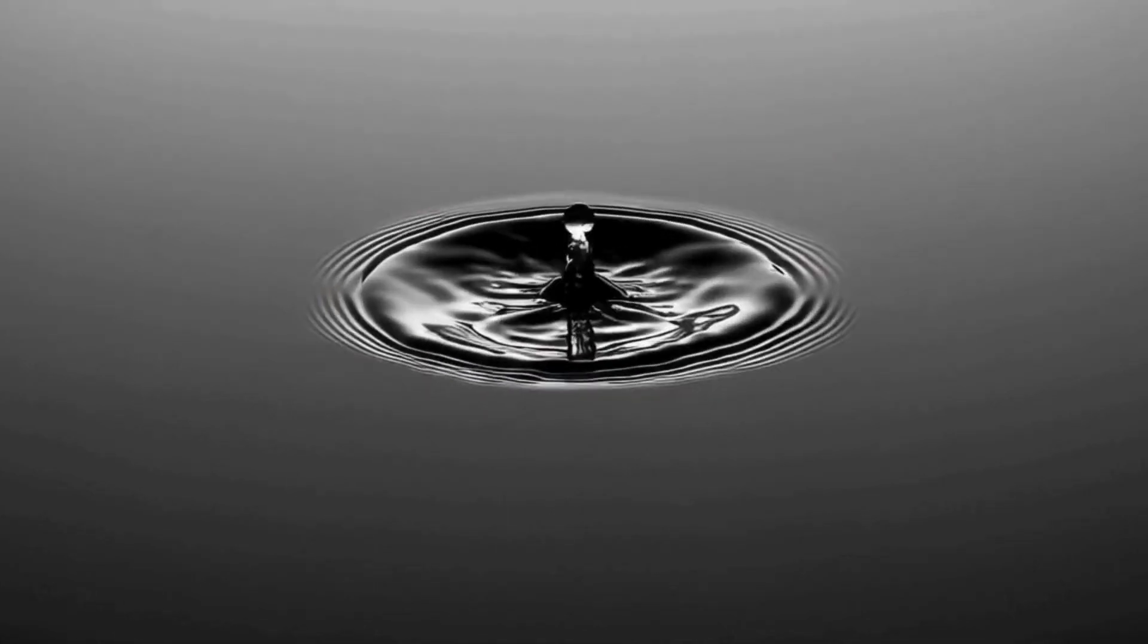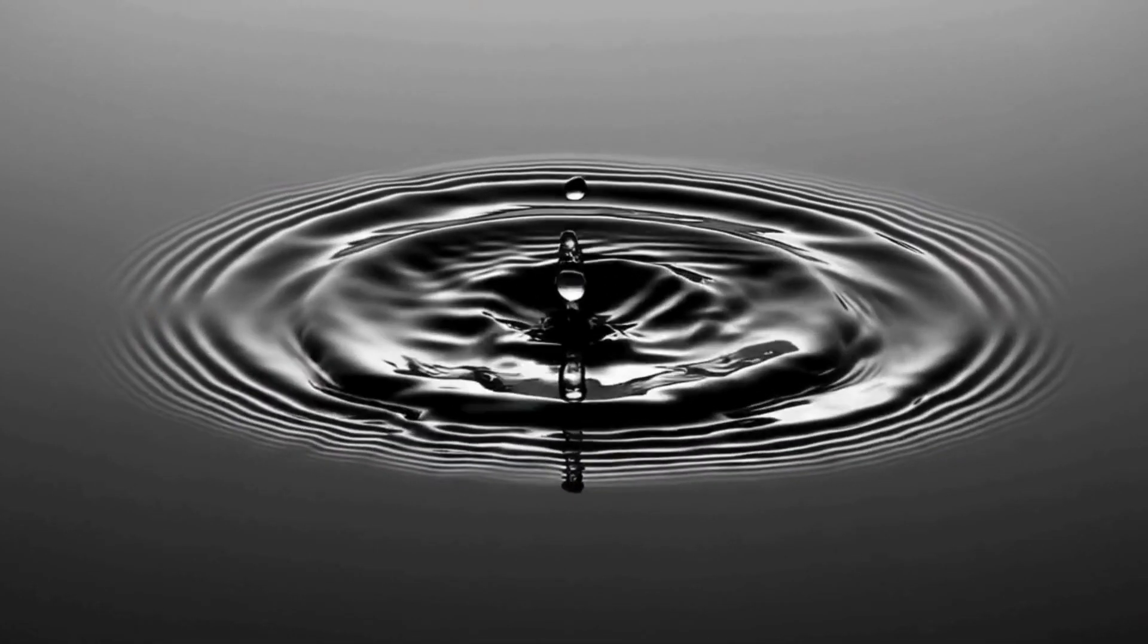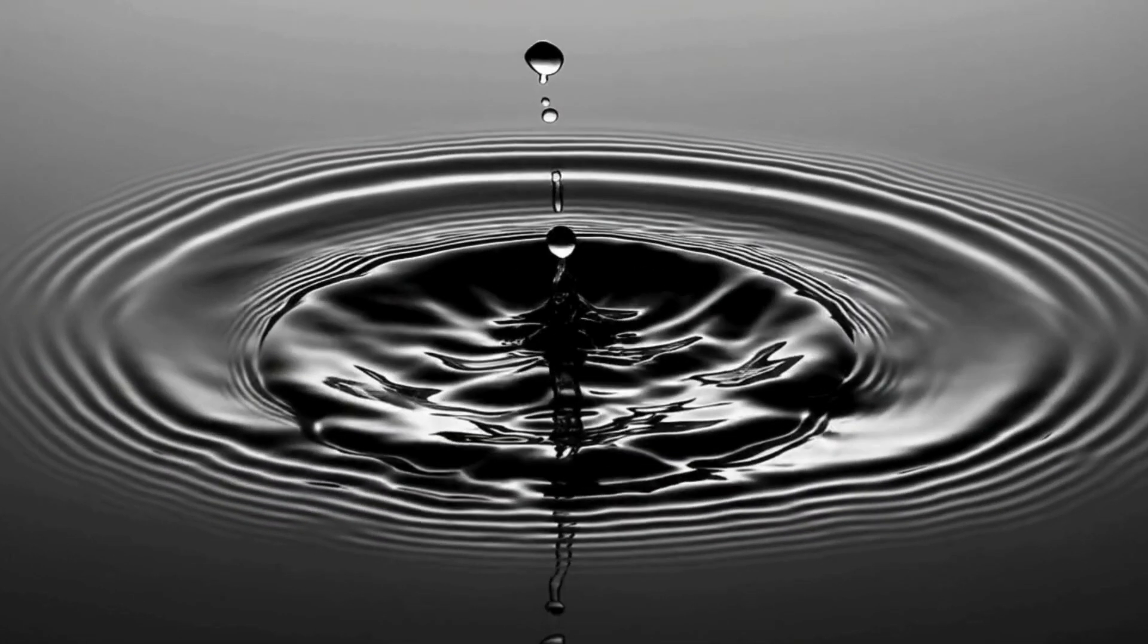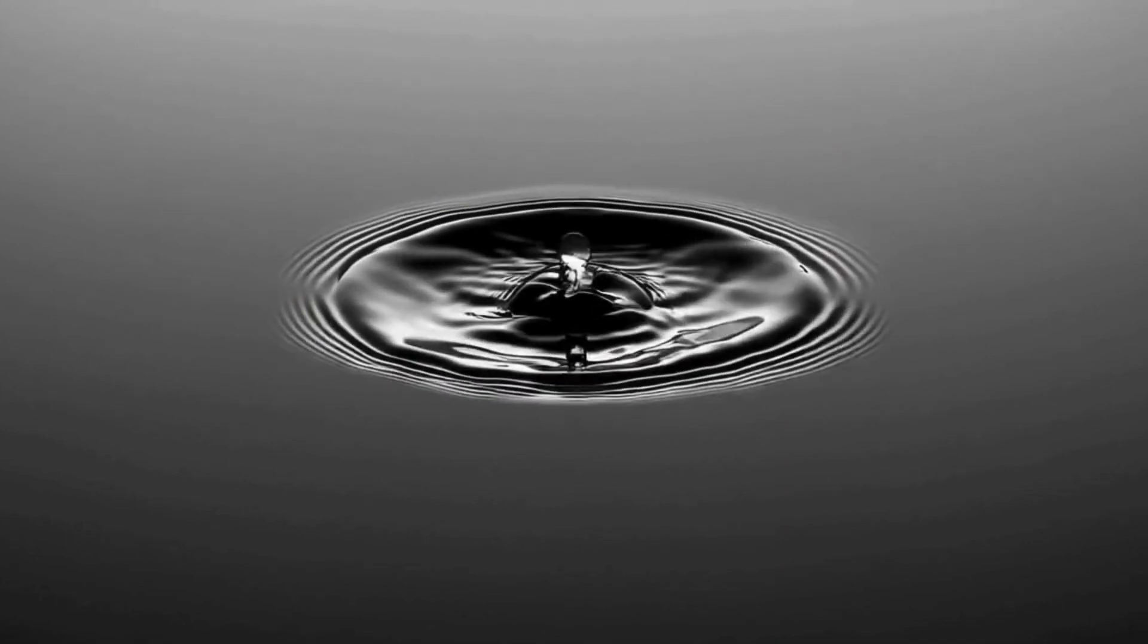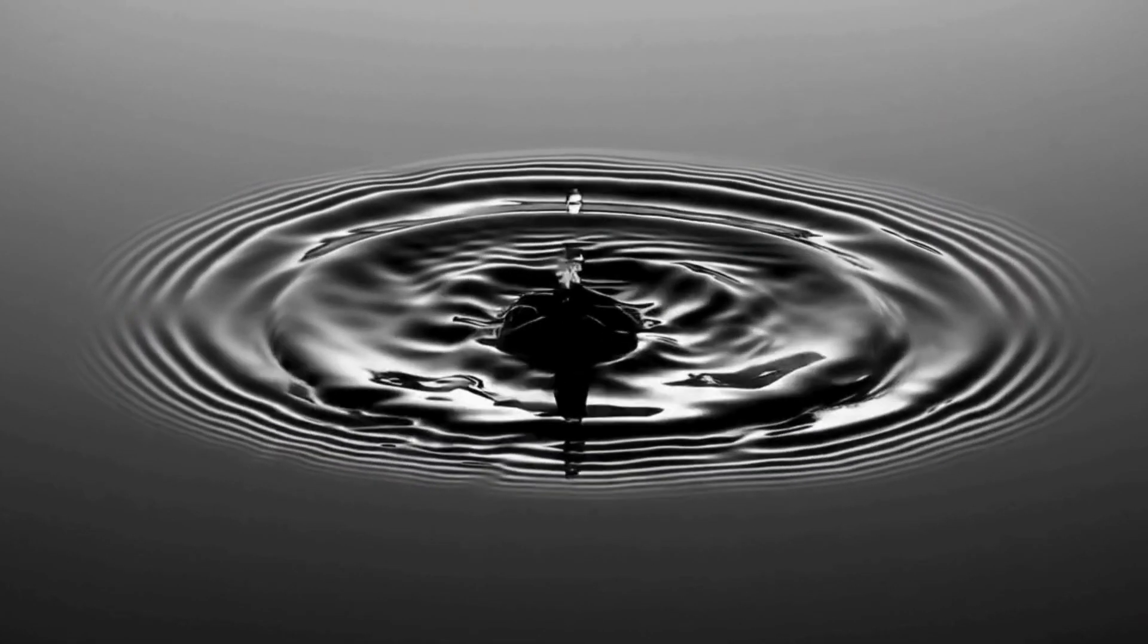But here's the more fascinating part. String theory also says that space-time itself is not flat at the smallest scales. Instead, it's wavy, fluctuating, and dynamic. Because of this, dark energy isn't constant, as classical models suggest. It behaves more like a wave in water, spreading out and weakening over time.